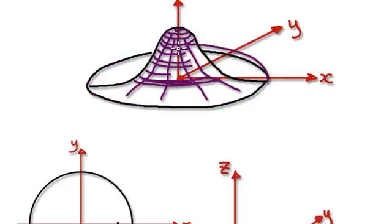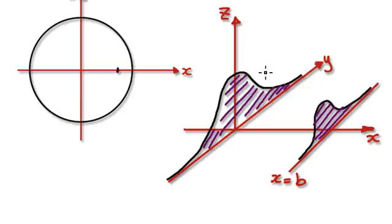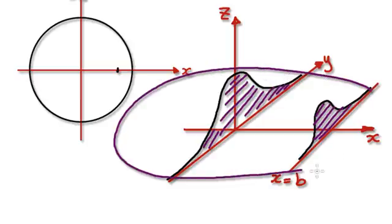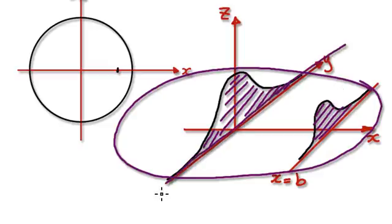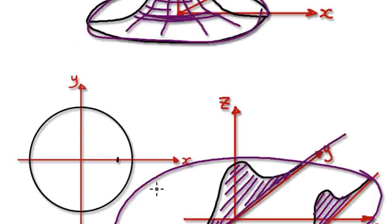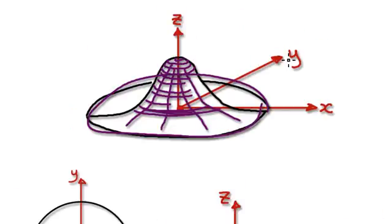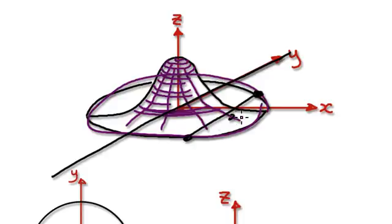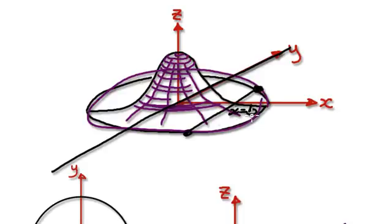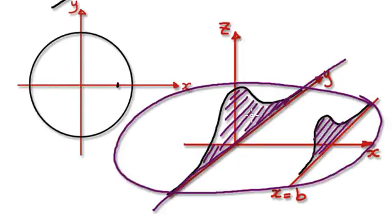If you look at this circle here, on this diagram — just drawn badly — it's really this circle here. So, cutting along the Y-axis here, and then if you cut it at a random place, let's call it at X equals B, then it would look like this.